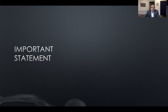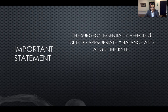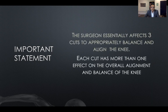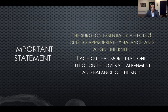When we do a knee replacement, we make three cuts to appropriately balance and align the knee. Each cut has more than one effect on the overall alignment and balance — it's a bit like a game of chess where one move requires thinking two or three moves ahead. For example, cutting the distal femur not only affects alignment in extension, but also affects the balance of the knee and the trochlear alignment. As you raise the distal femur, the trochlear alignment changes.